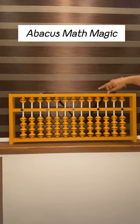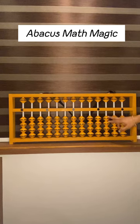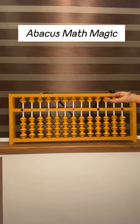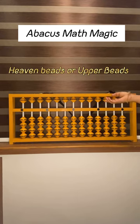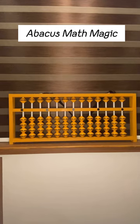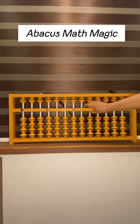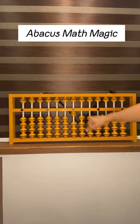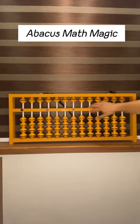Seeing the Abacus tool here, master tool. These beads are called lower beads or earth beads, and these beads are called heaven beads or upper beads. Now see here, one bar is here. If the bead touches the bar, it gets value. Now it is in zero position.